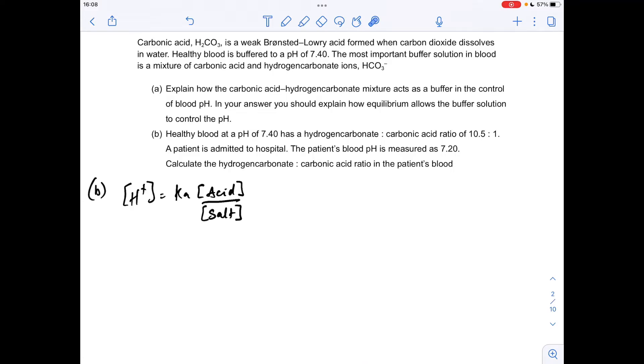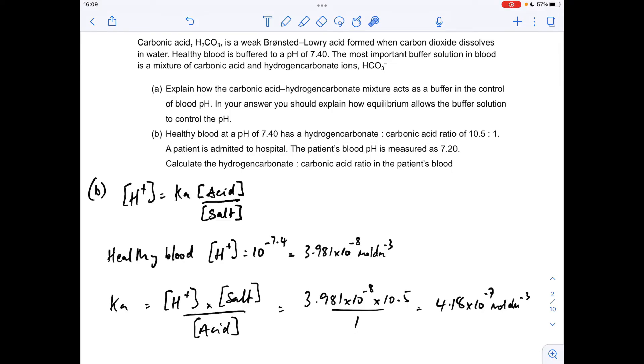I'll just explain it. Healthy blood H+ concentration is 10 to the minus 7.4, which comes out of that.